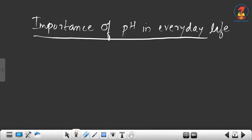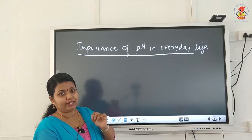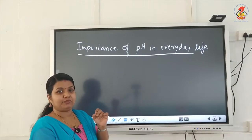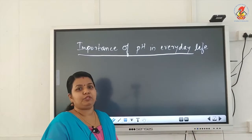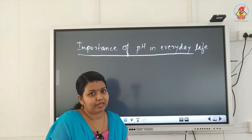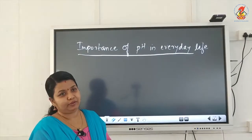Always when you write pH, P is a small letter and H is a capital letter. What is pH? Power of hydrogen. P stands for 'potence', the German word which means power, and H stands for hydrogen.